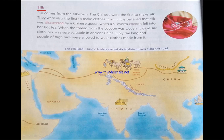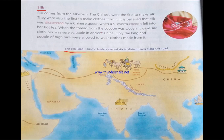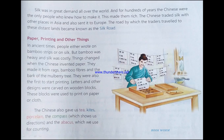This map shows a route known as the Silk Road — the route through which the Chinese carried out their trade. Silk was in great demand all over the world, and for hundreds of years the Chinese were the only people who knew how to make it. This made them rich. The Chinese traded silk with other places in Asia and also sent it to Europe. The road the traders traveled to these distant lands became known as the Silk Road.